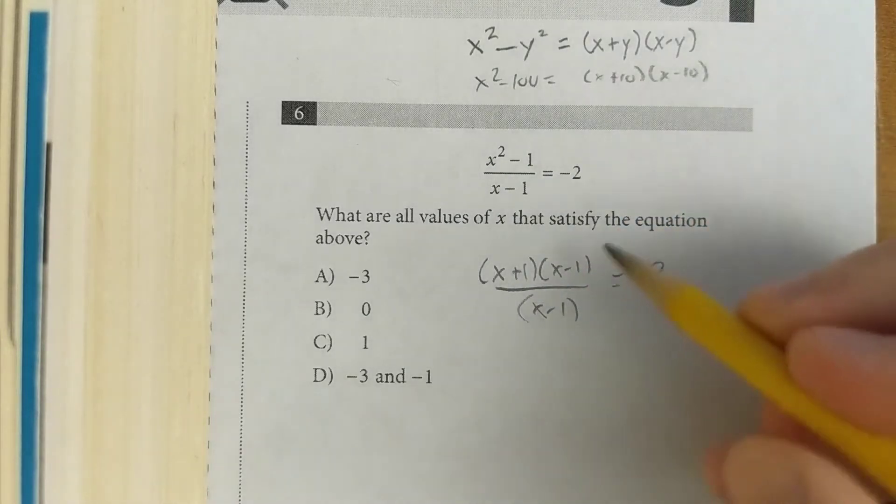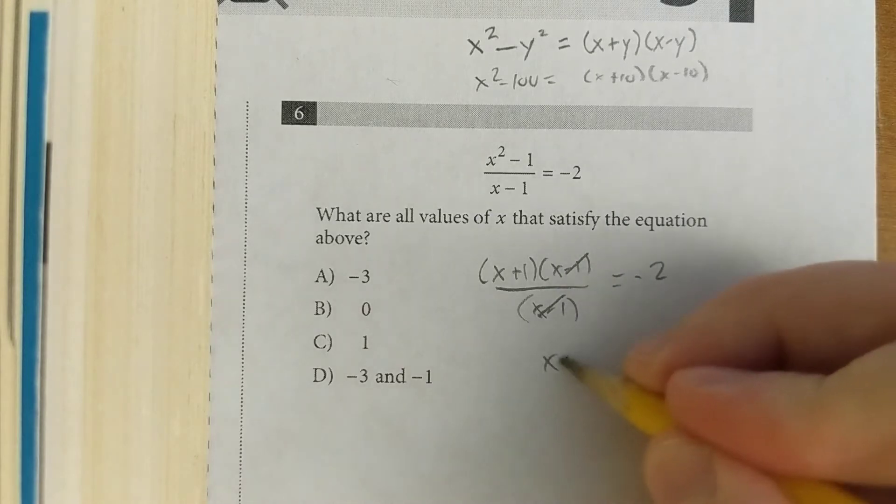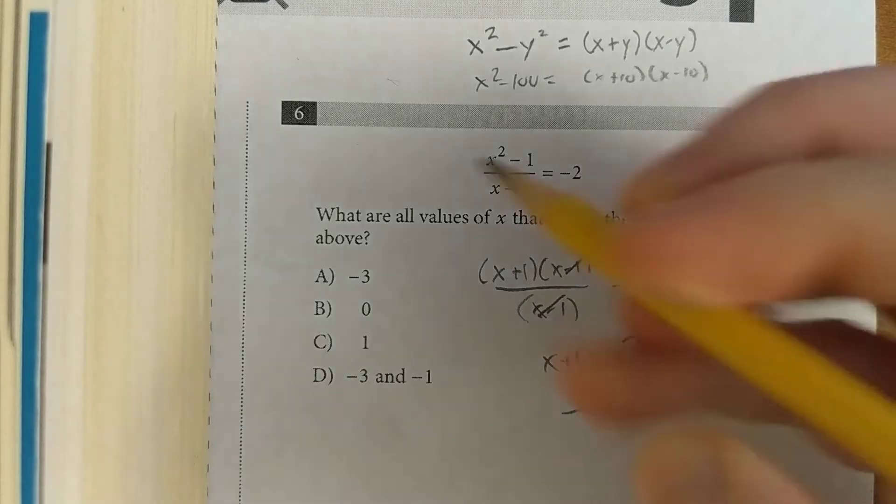The rest of the equation is the same. Now we can cancel out the (x - 1) terms. You get x + 1 = -2. Subtract 1 from both sides, and you get x = -3.